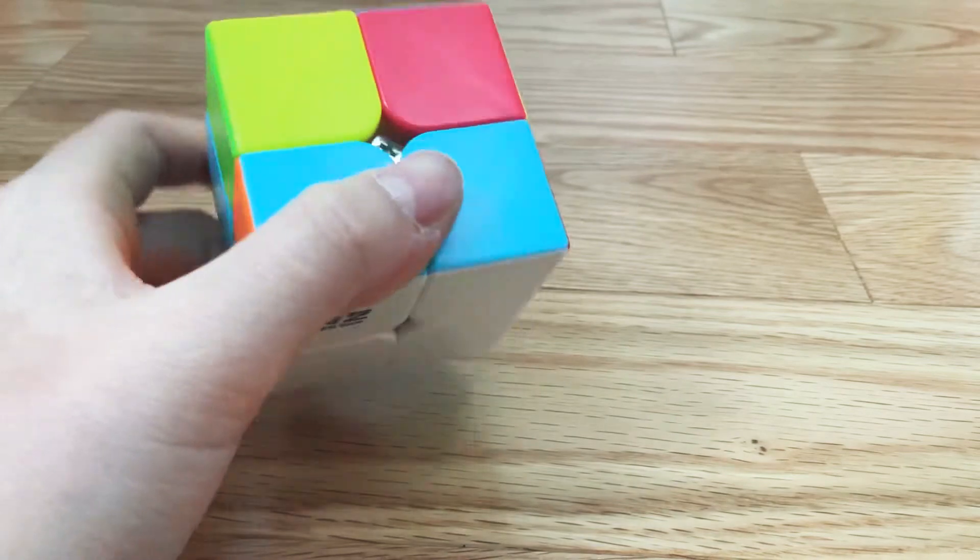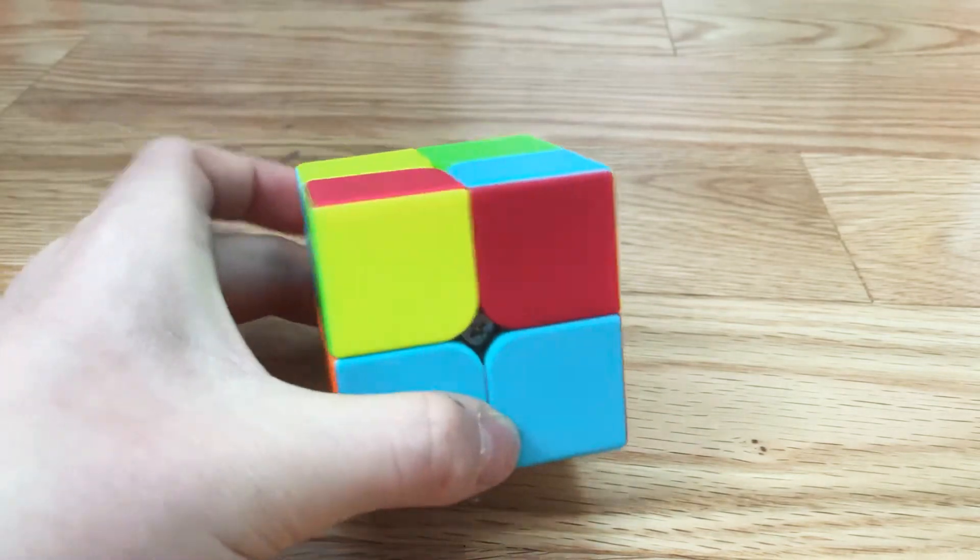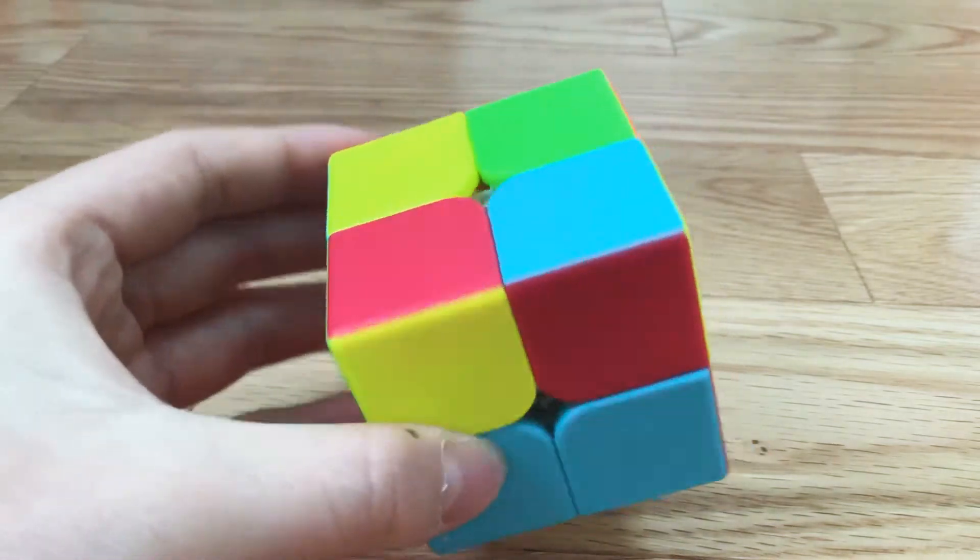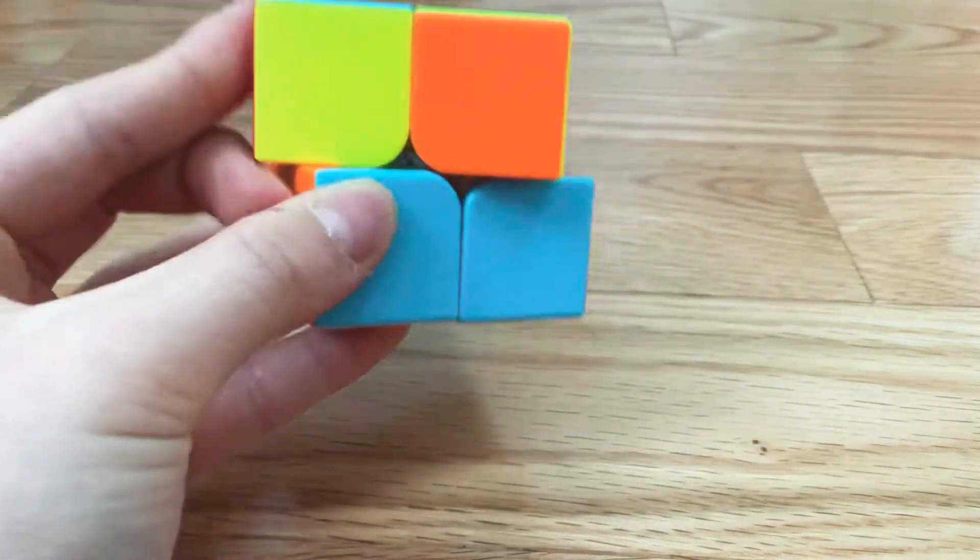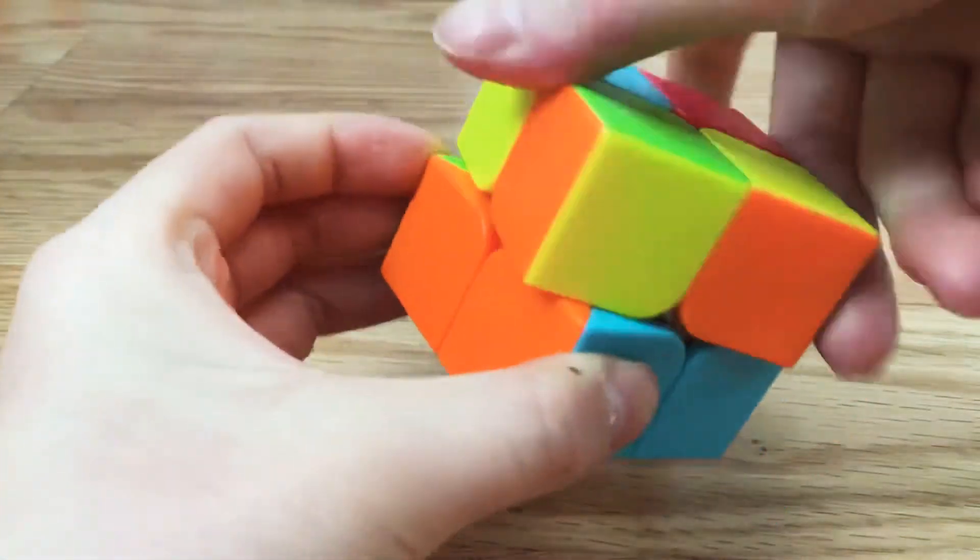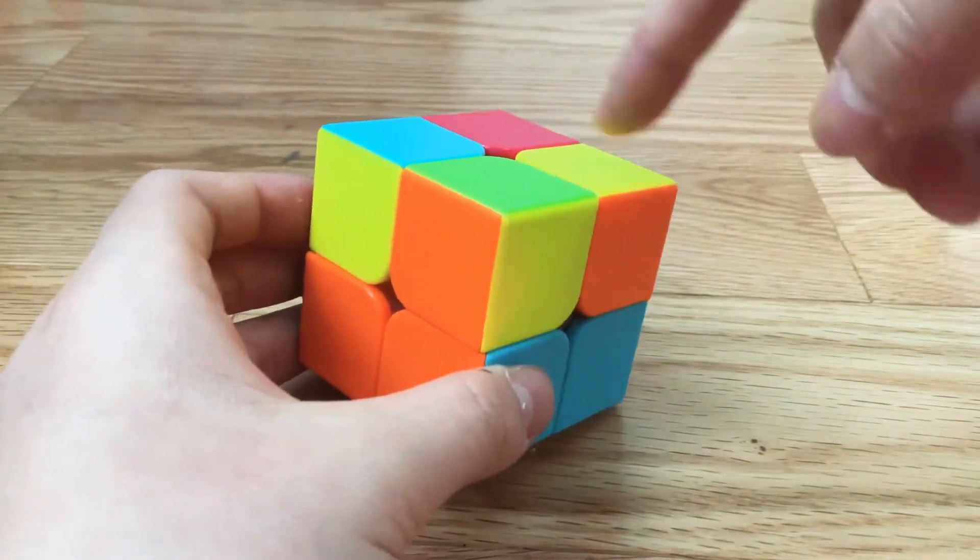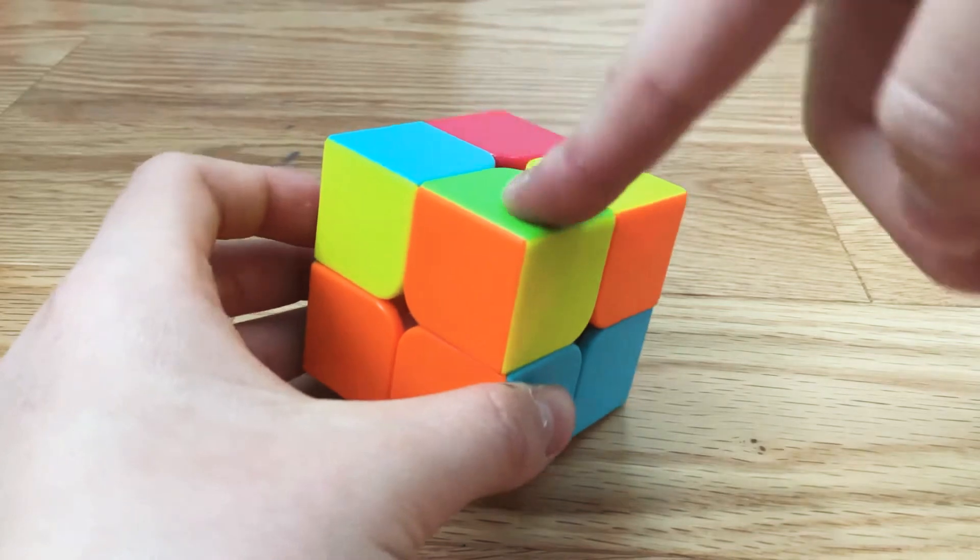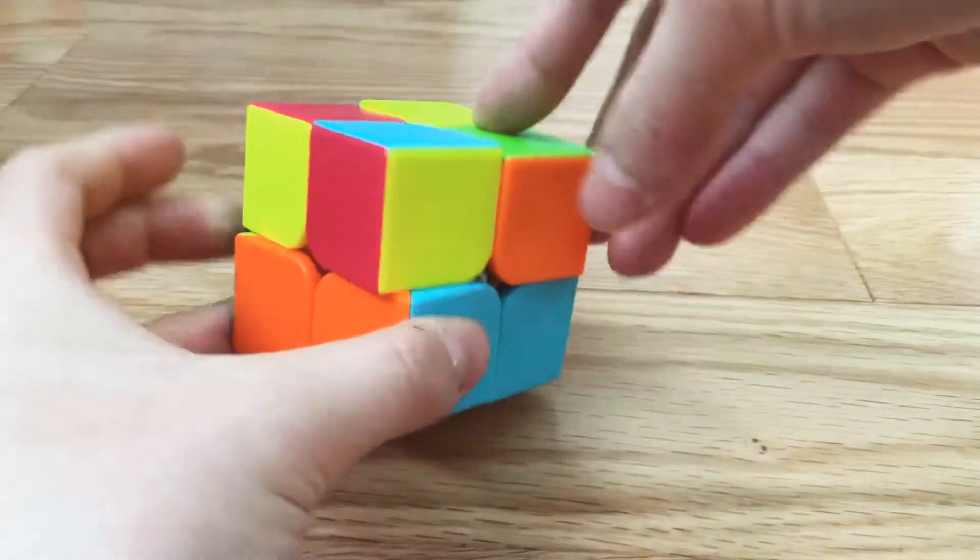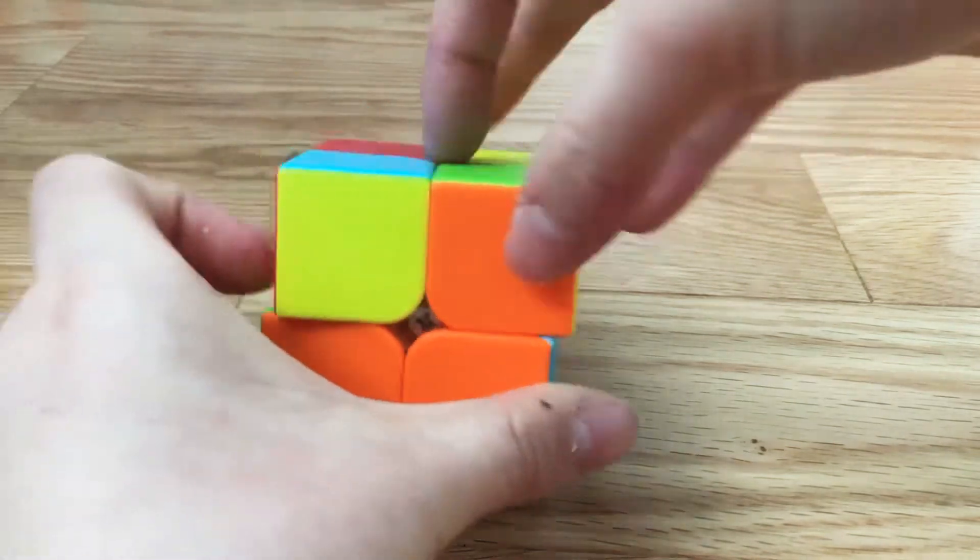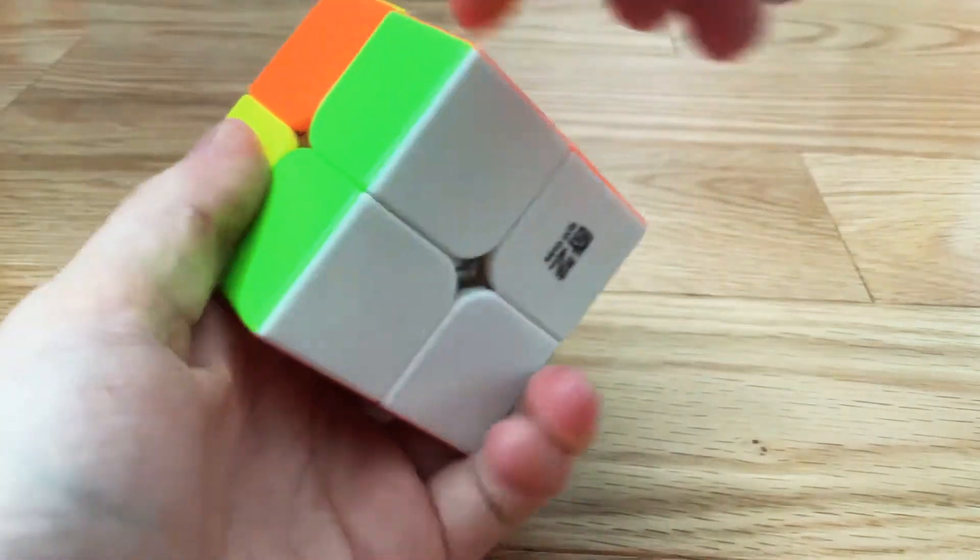So then the next step is to get all of these in place. Right now you see these look like this, so first find any corner. It doesn't have to be yellow on top. For example, I choose this corner, it's yellow, orange, and green. So now you find one that has orange and green.